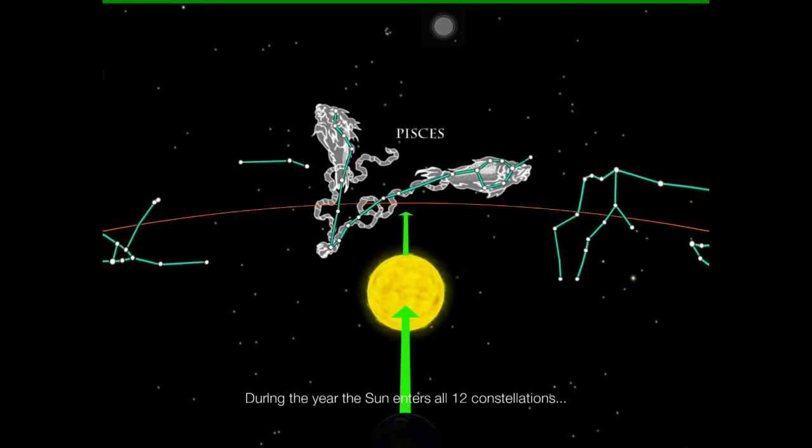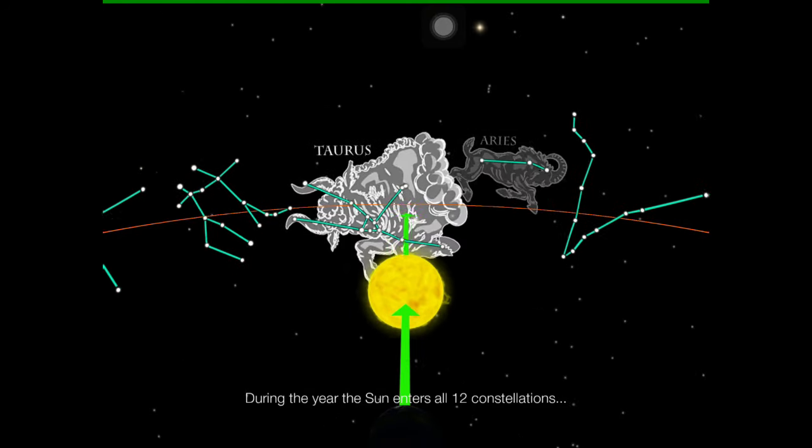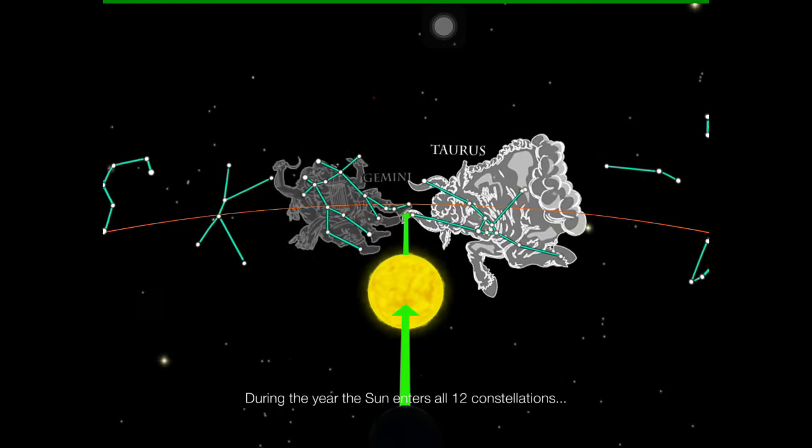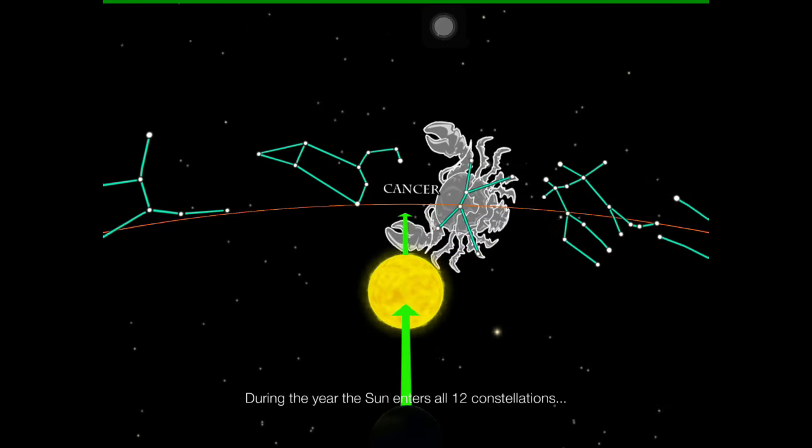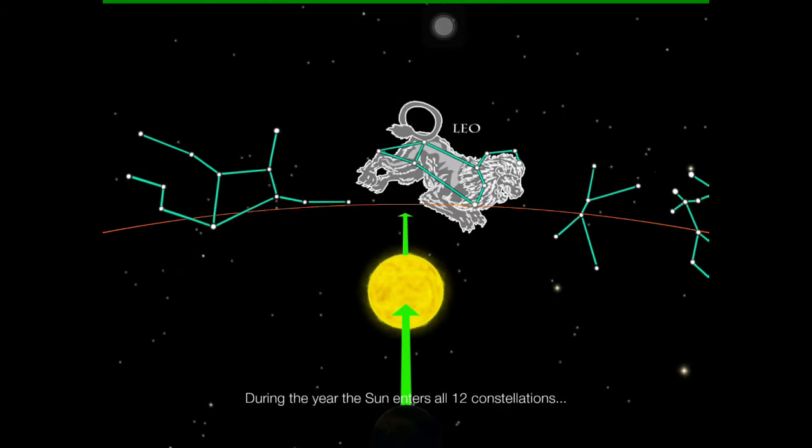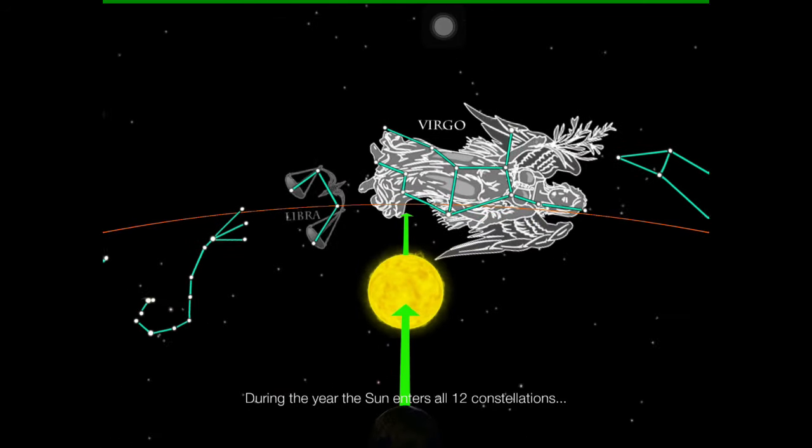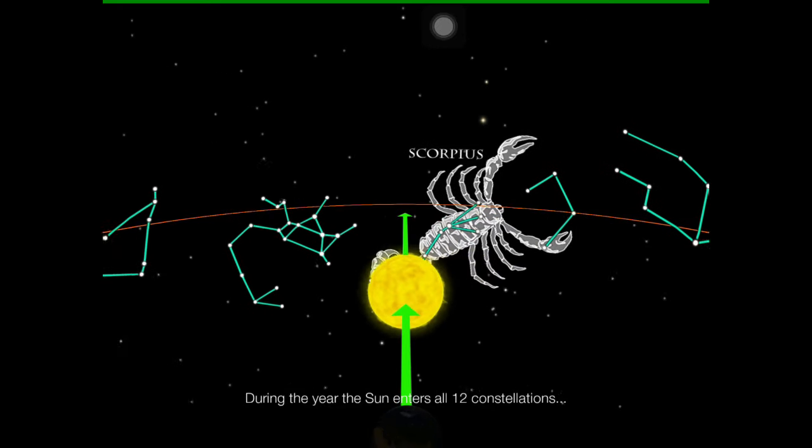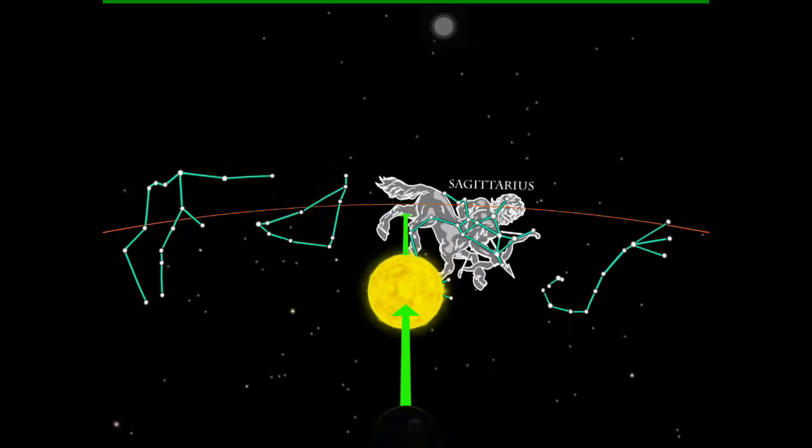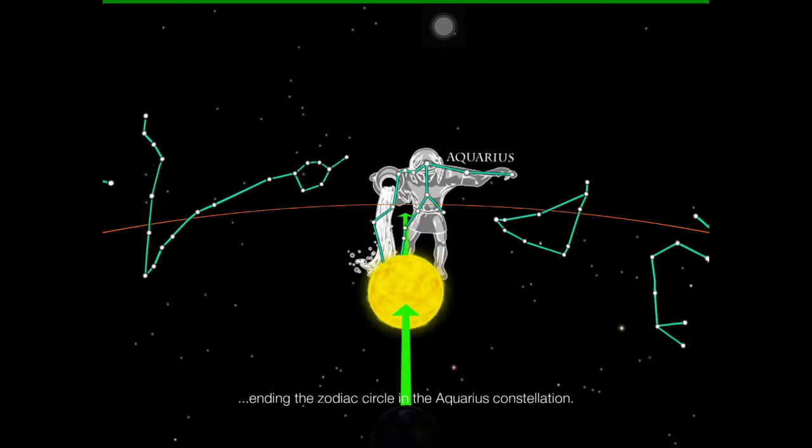During the year, the Sun enters all 12 constellations, ending the Zodiac Circle in the Aquarius constellation.